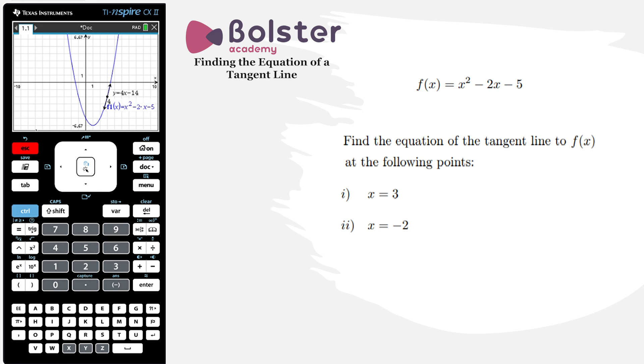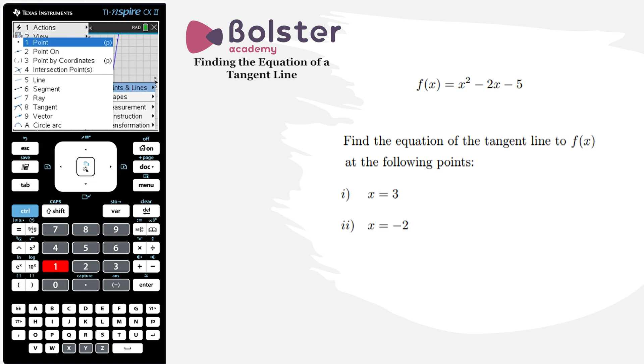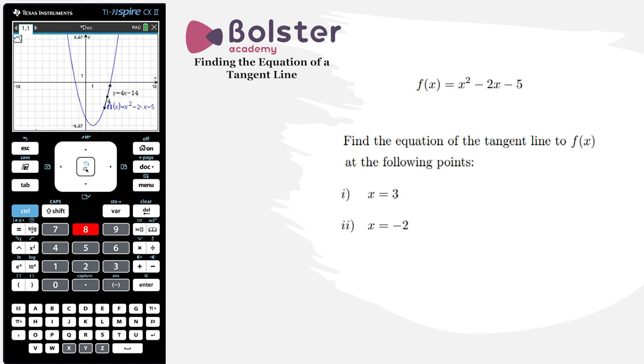Okay so let's try and get the equation of the tangent line at x equals minus 2. So menu, geometry, points and lines, tangent and now I'm going to click on the graph and now I have to find the point where x equals minus 2. So we know it's approximately somewhere around here but it's very difficult to get exactly where x equals minus 2 in order to get my tangent line.